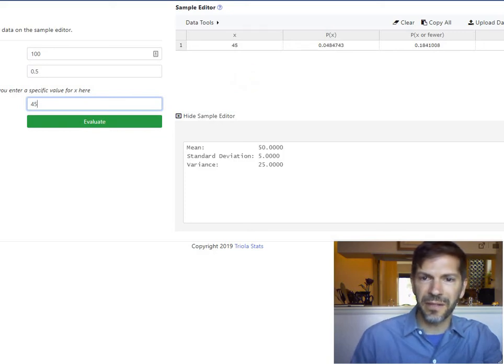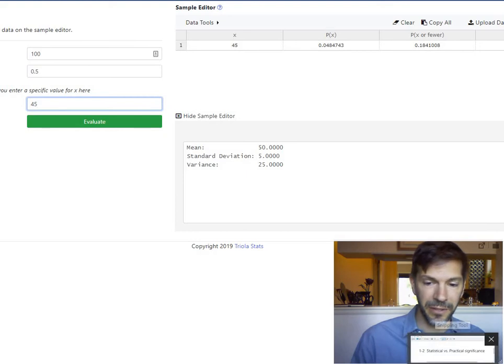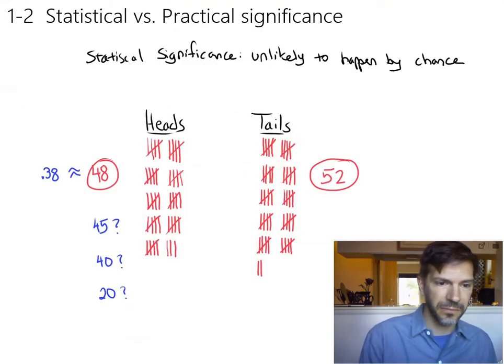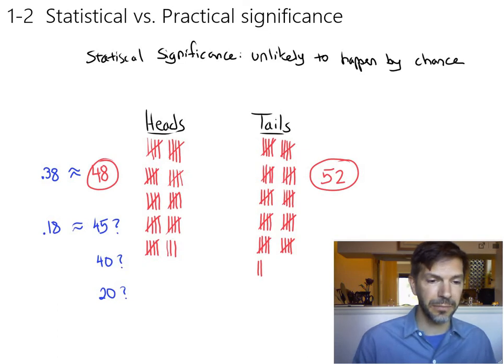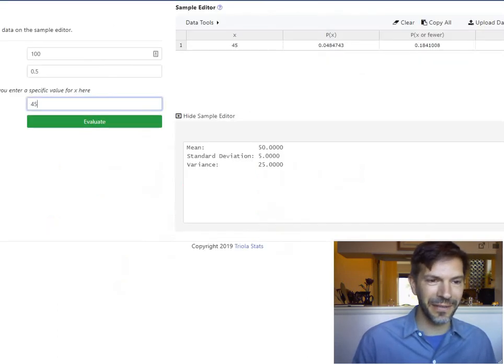I'll just change that and say what's the probability of getting 45? And that's down to like 18% now. That'll only happen about 18% of the time with a fair coin. So this is down to an 18% chance. Granted, it can happen.